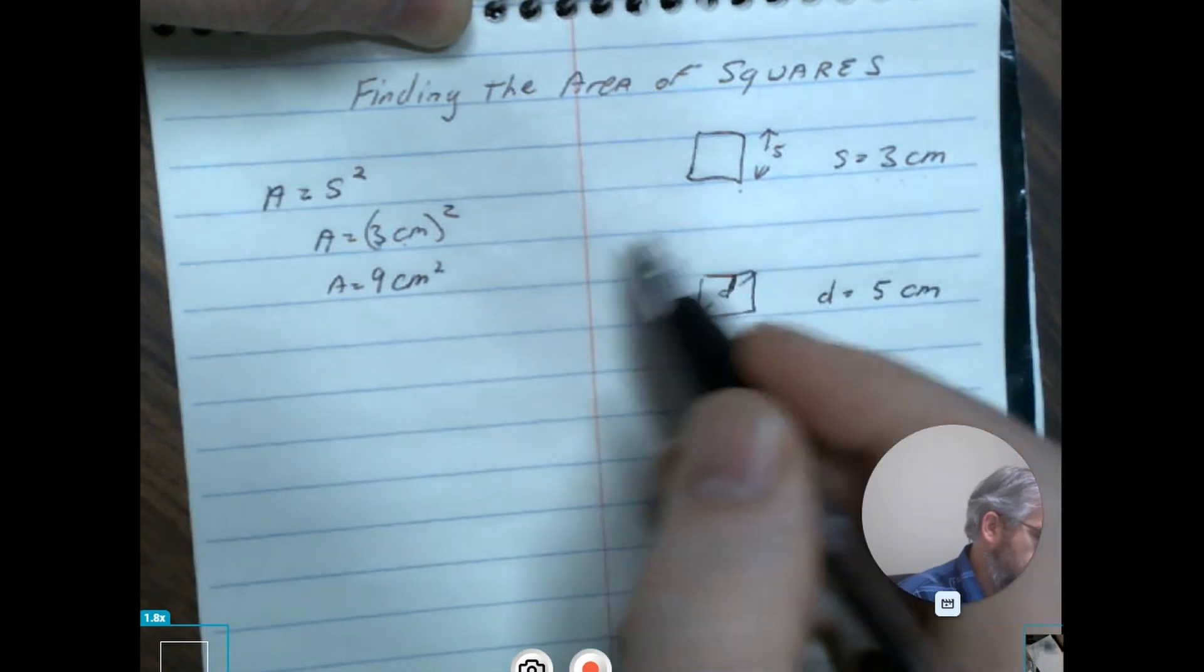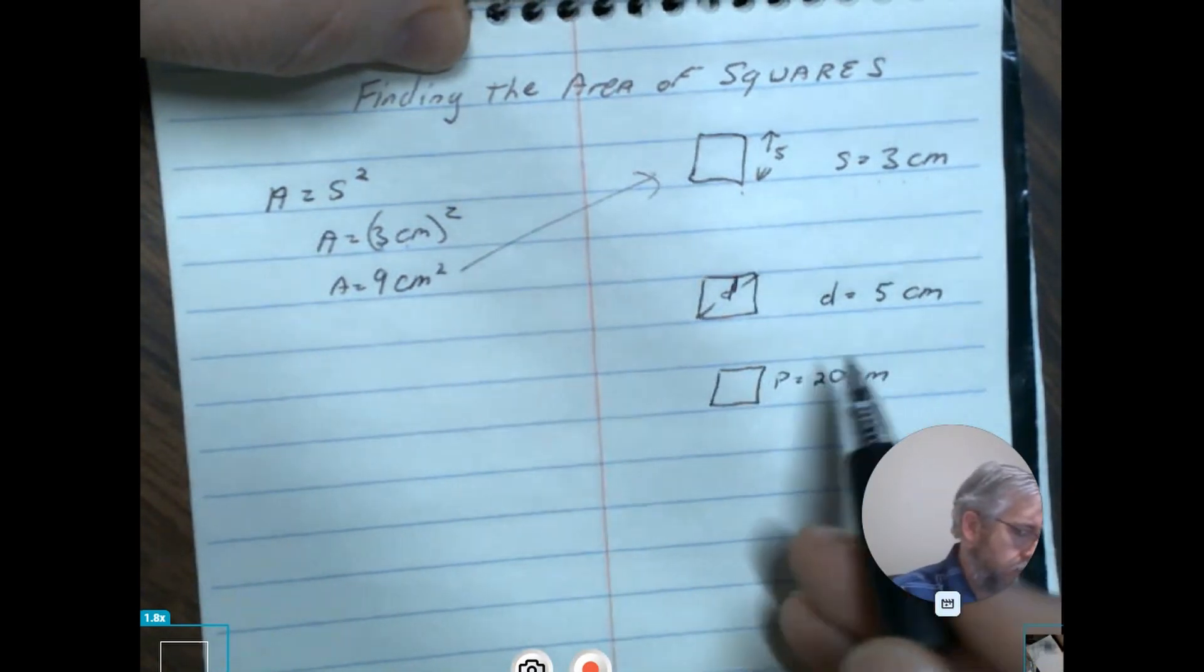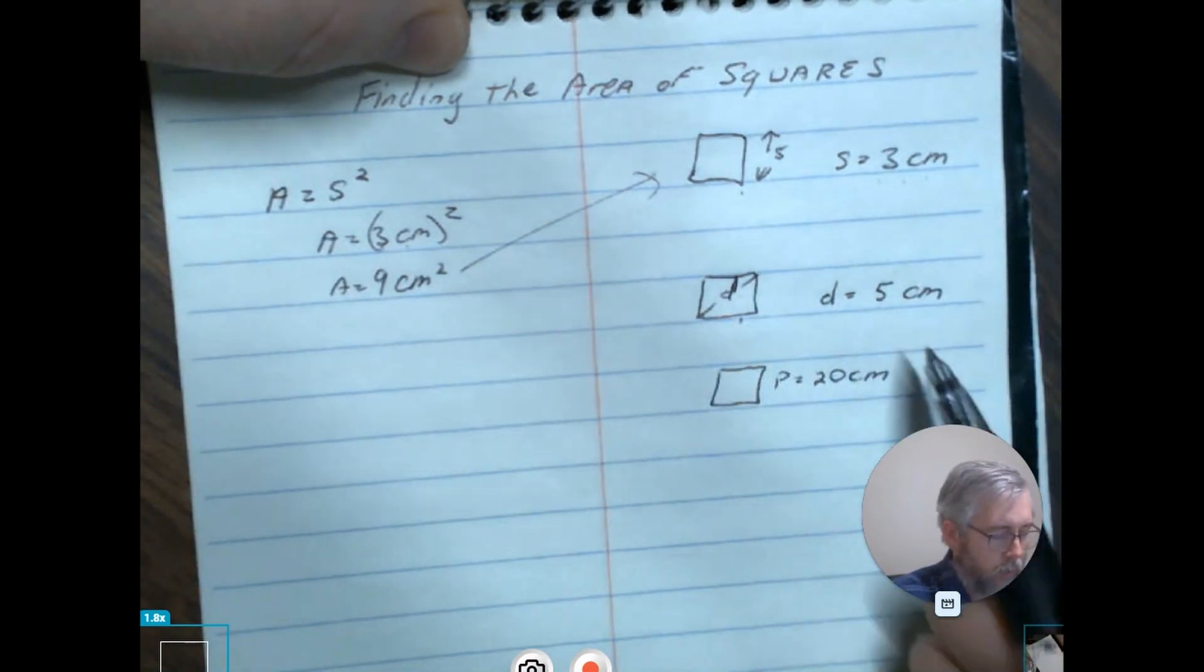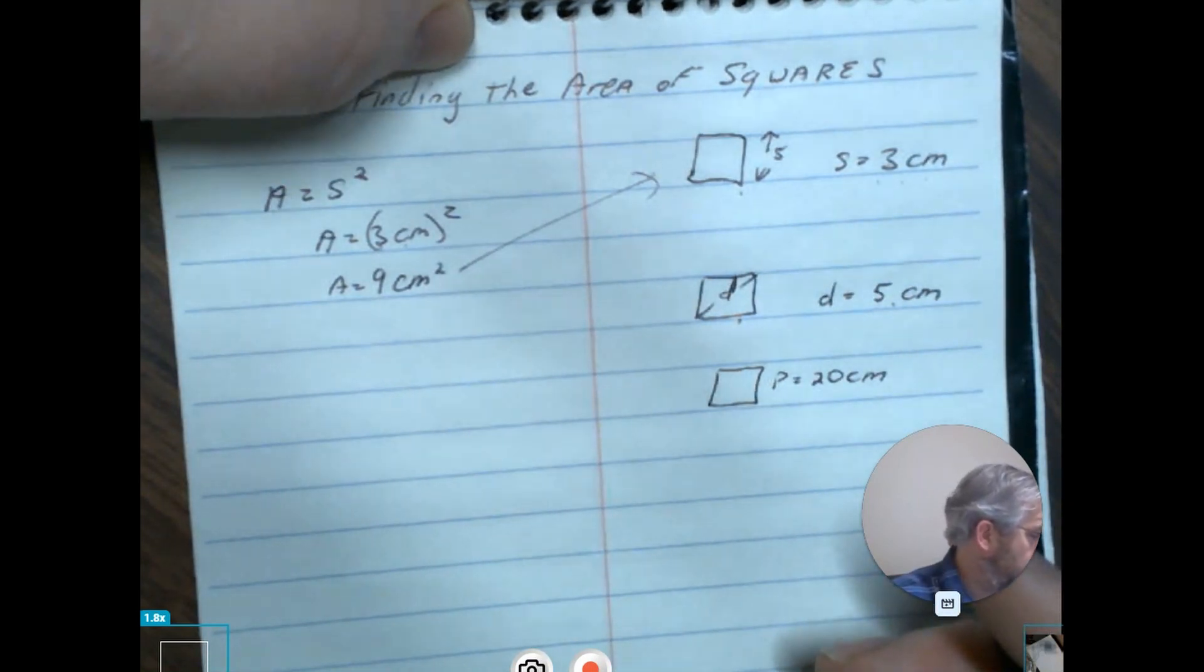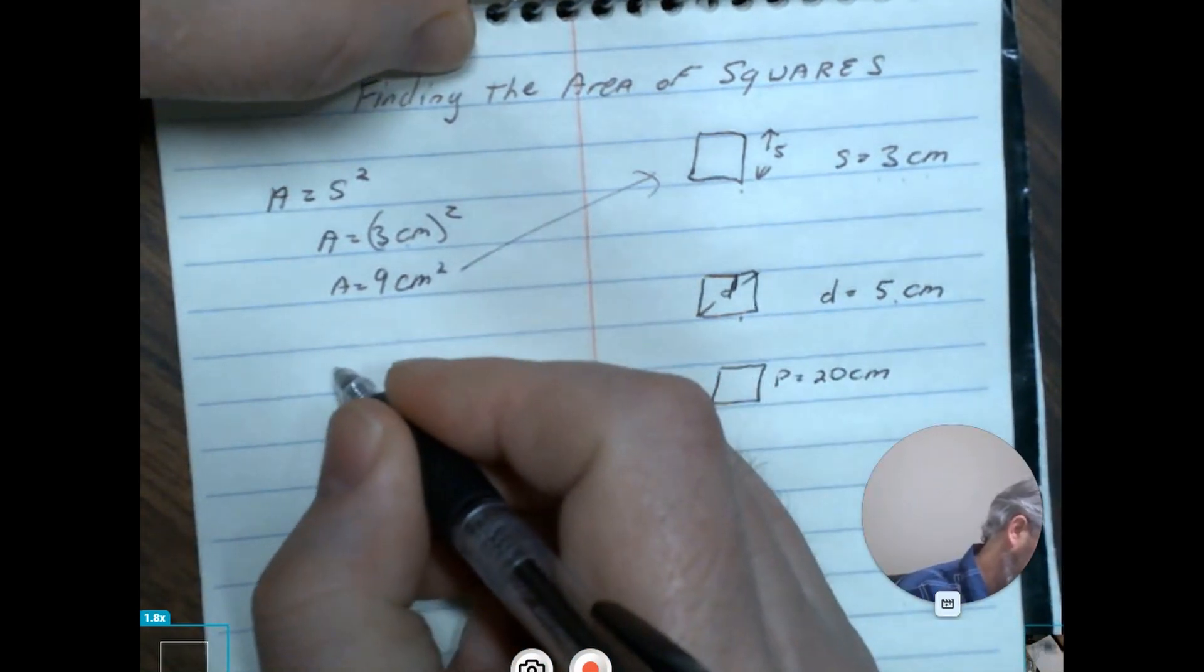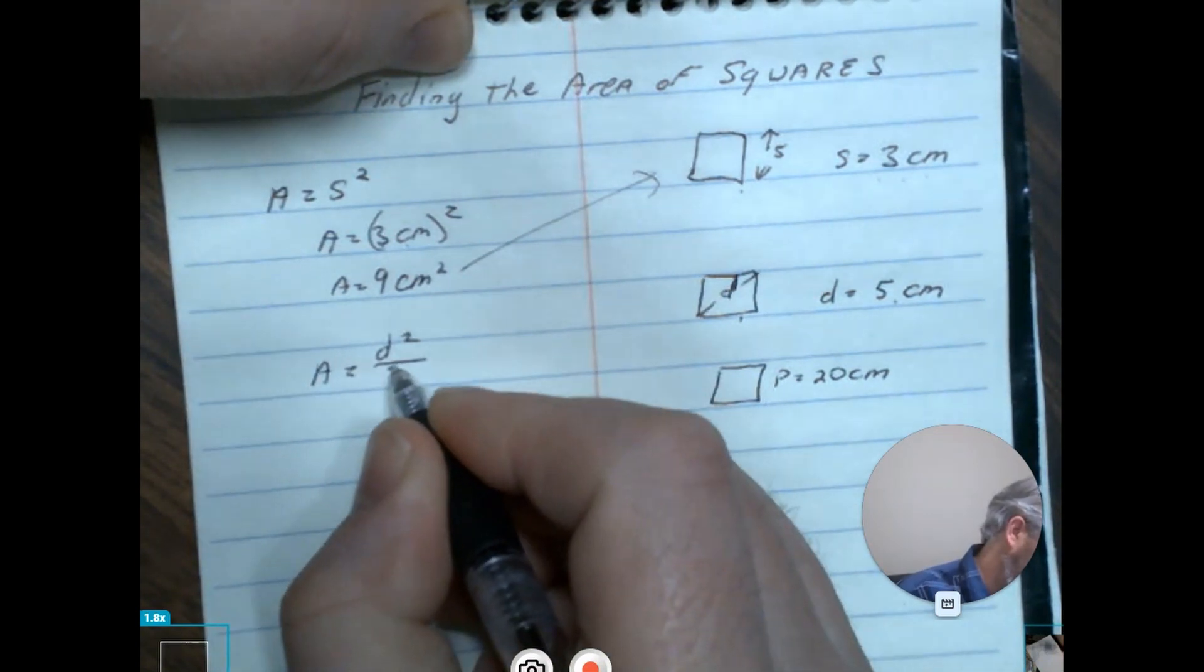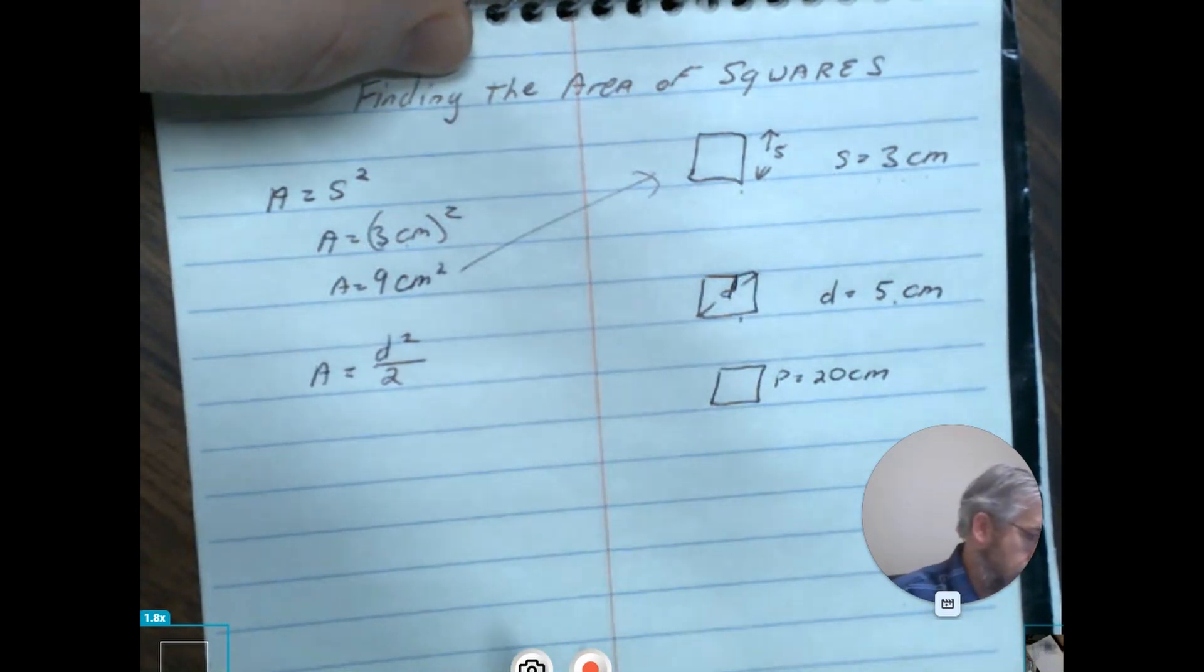That's how we do the first one. The second one we're provided the diameter across as five centimeters. In this case, we're going to use the formula A is equal to d squared over two. This is the formula we're going to be using, and again we're just going to put in our values accordingly.